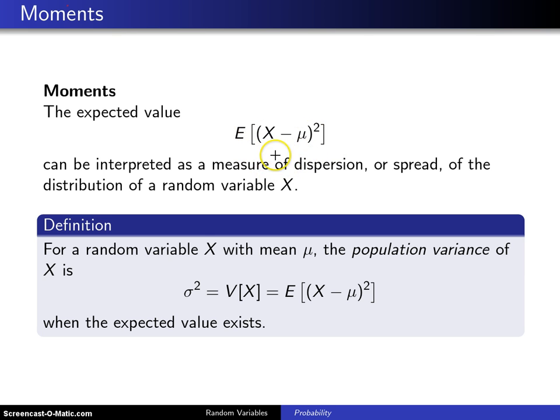So it turns out in the definition below here, the expected value of x minus mu squared is known as the population variance of the random variable x, which has mean mu, and we have special symbols for that. One way of writing this is sigma squared. Another way is V of x.